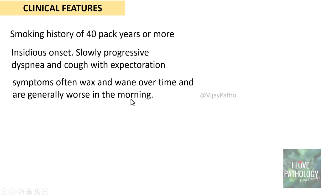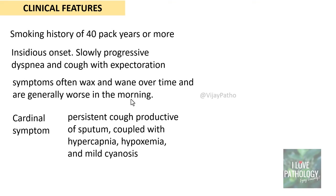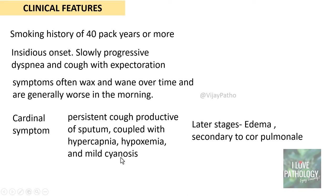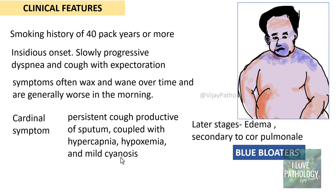Symptoms often wax and wane over time and are generally worse in the mornings. The cardinal symptom of chronic bronchitis is persistent cough productive of sputum — because of mucus hypersecretion — coupled with hypercapnia, hypoxemia, and mild cyanosis, usually in the later stages. Finally, it can also result in edema secondary to cor pulmonale, because increased resistance in the airways results in pulmonary hypertension leading to heart failure. This is how the name 'blue bloaters' came into existence for patients of chronic bronchitis in end stages.